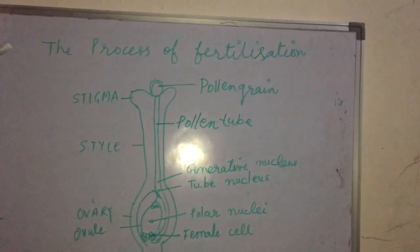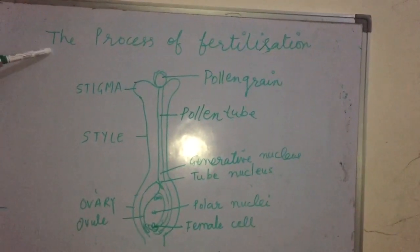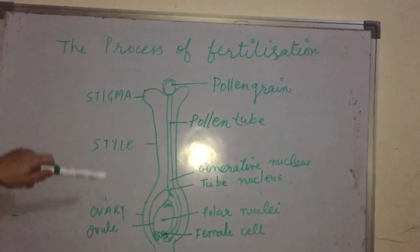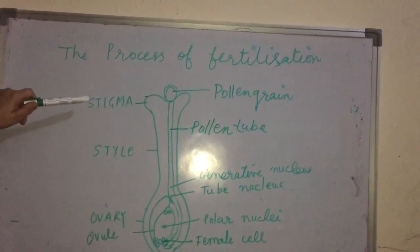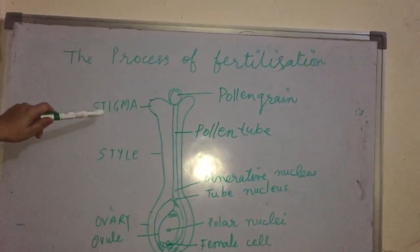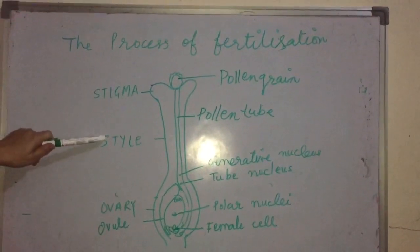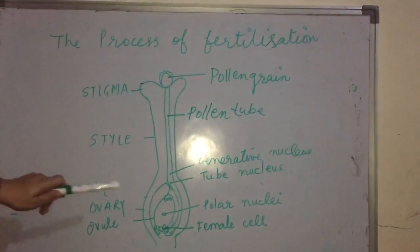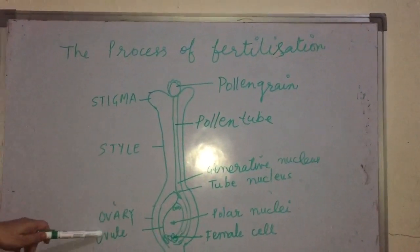Hello children, today I will discuss the process of fertilization. This is the longitudinal section of a pistil which shows the main parts: stigma, style, ovary, and inside the ovary lies the ovule.